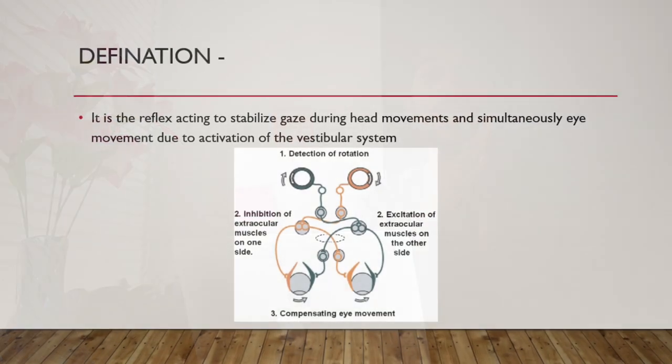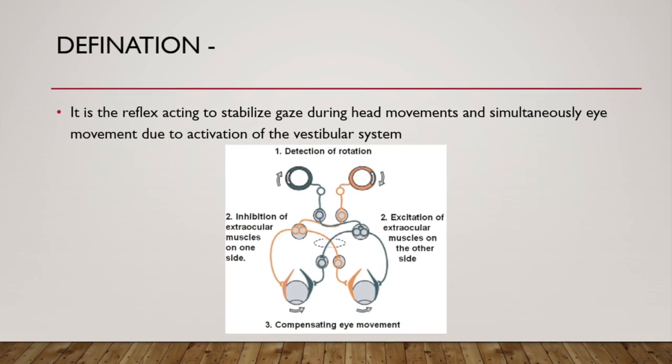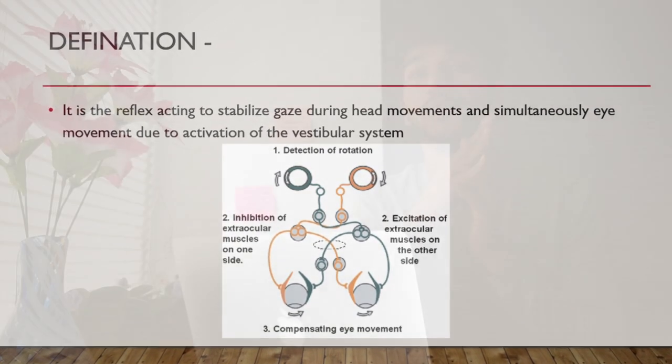So what is the actual definition of the vestibular ocular reflex according to medicine? The vestibular ocular reflex is a reflex acting to stabilize gaze during movement of the head. For example, when you move your head rightwards, your eyes stabilize.